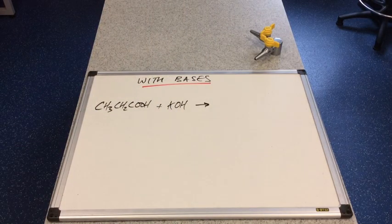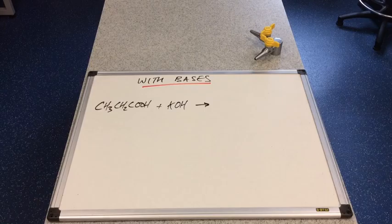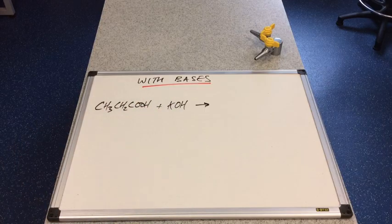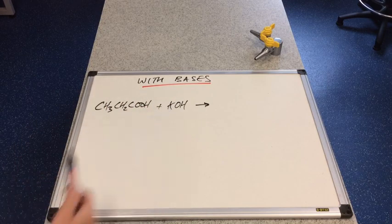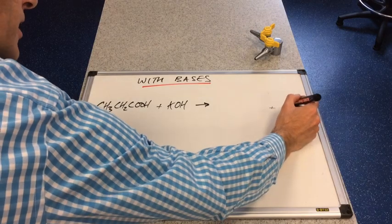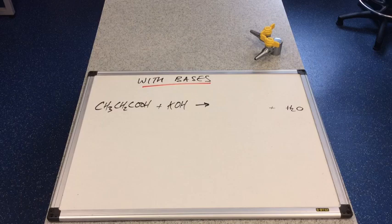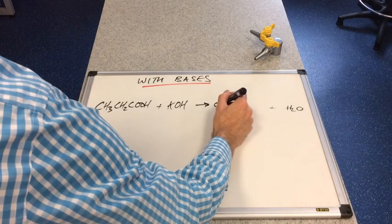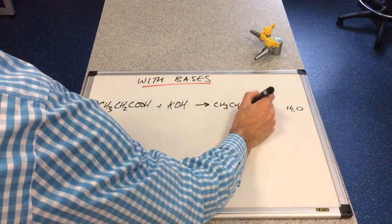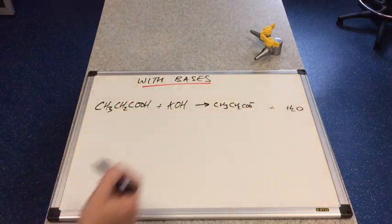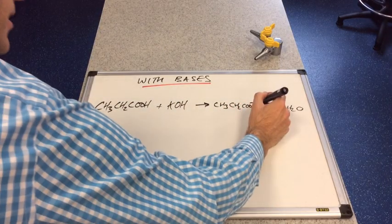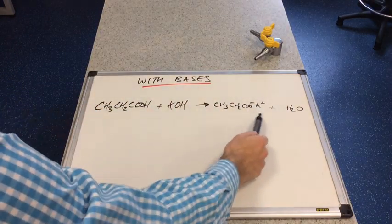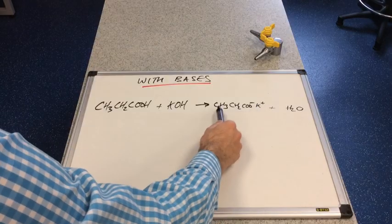So we'll look at a couple of reactions of carboxylic acids with bases now. So I've gone for propanoic acid with potassium hydroxide. Remember acid plus base makes salt and water. So we'll pop the water at the end there. So what's going to be the salt? We're going to lose the H as an H plus. So we're going to be left with CH3CH2COO minus. That's going to be propanoate. Potassium's in group 1. So it's going to be K plus. So the salt would look like that. And that's going to be called potassium propanoate.